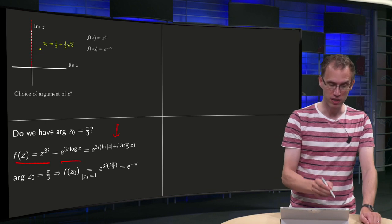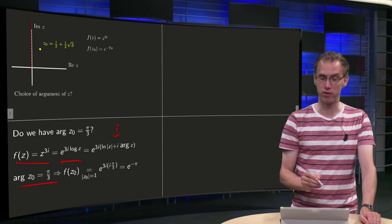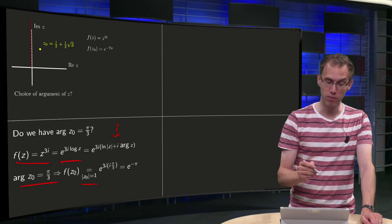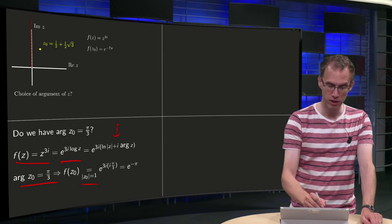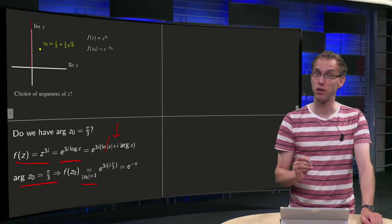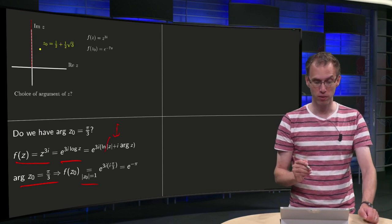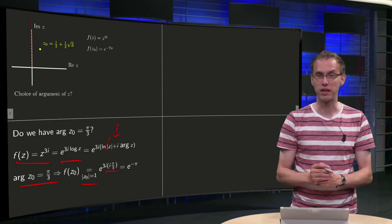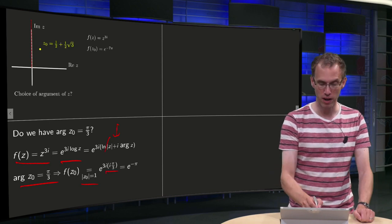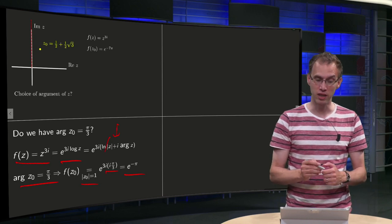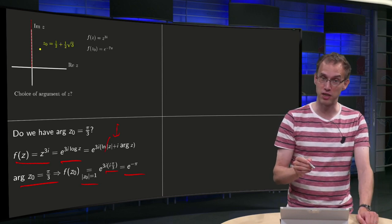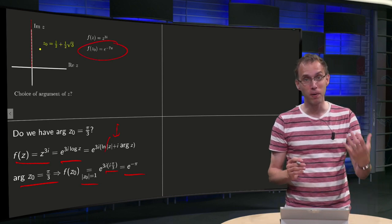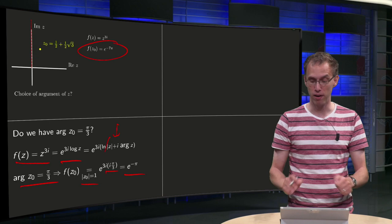Now, if we set argument of z equals pi over 3 and our modulus is 1, then for our f of z0, what would we get? This term cancels out because the modulus equals 1, so we are left with 3i times the argument of z, 3i times pi over 3, so e to the power of minus pi. But you see, we don't have e to the power of minus pi as fz0, but e to the power of minus 7pi, so apparently we did not choose pi over 3.